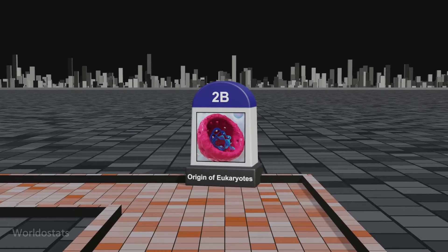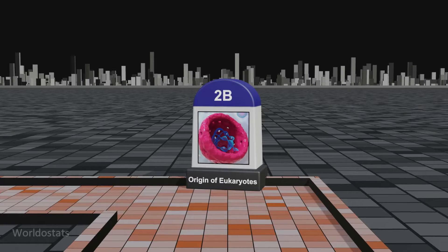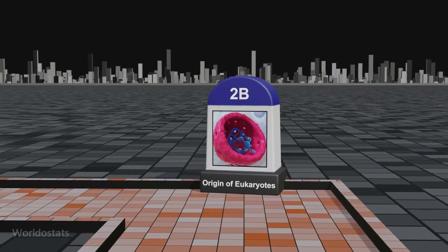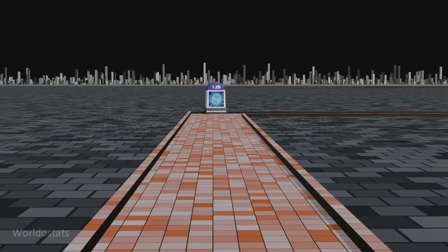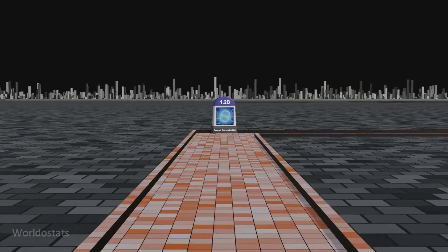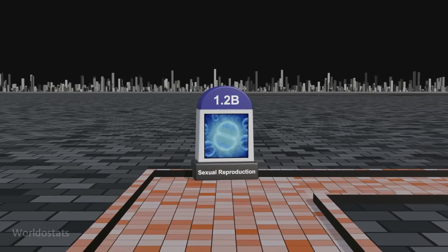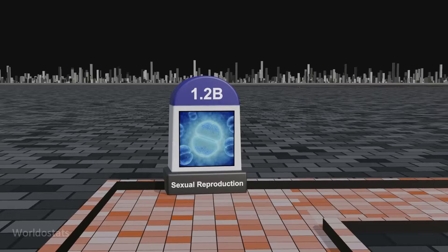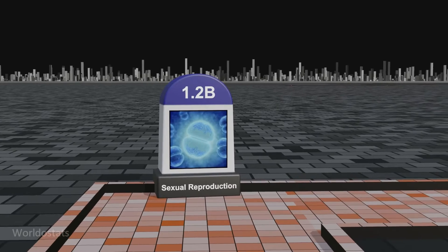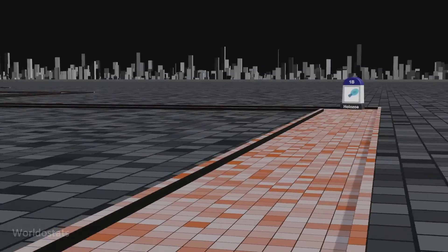The origin of eukaryotes — complex cells with distinct nuclei and organelles — dates back approximately 2 billion years ago, marking a crucial evolutionary development in the history of life on Earth. The evolution of sexual reproduction, characterized by the fusion of gametes and genetic recombination, occurred around 1.2 billion years ago, introducing a key mechanism for genetic diversity and evolutionary innovation.